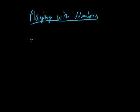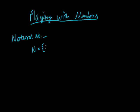Before starting this chapter, first of all we know the different types of numbers. First we talk about the natural numbers. The numbers that we use for counting are known as natural numbers, and the set of natural numbers is represented by capital letter N. All the counting numbers are known as natural numbers. Example: 1, 2, 3 and so on. The set of all these counting numbers forms the natural numbers.